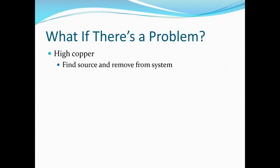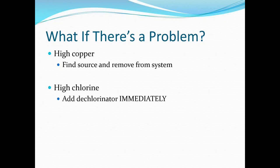With high copper, you need to find the source and remove it from the system. There are some well systems that will automatically come in with high copper — if that's the case, you may need to add a deionizer to your system, which will also help with hard water problems. For high chlorine or any chlorine, you want to add a dechlorinator immediately. Chlorine at any level is very, very bad for fish. You can lose fish after a chlorine spike for up to two to four weeks even from very low levels coming in at a small dose every little bit — basically think of it as arsenic poisoning.